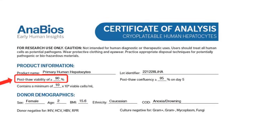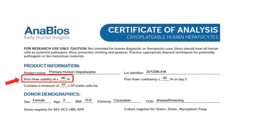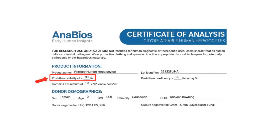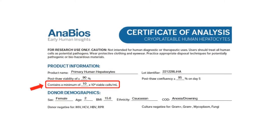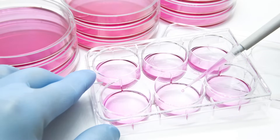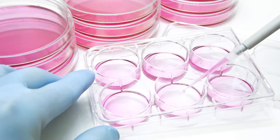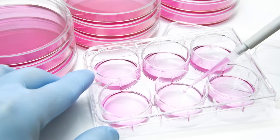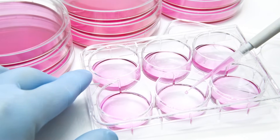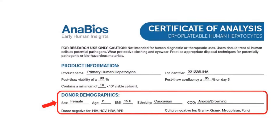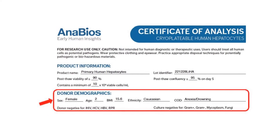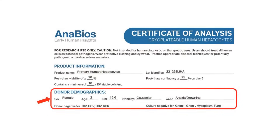First, viability: high rates around 90% vouch for the health and robustness of hepatocytes. Then consider cell count — does it align with your experimental needs? For instance, a typical plate requires about 10 million hepatocytes, so usually each vial should contain 5 to 10 million cells. Also consider the donor's background, including age, sex, and health, ensuring they align with your study parameters.